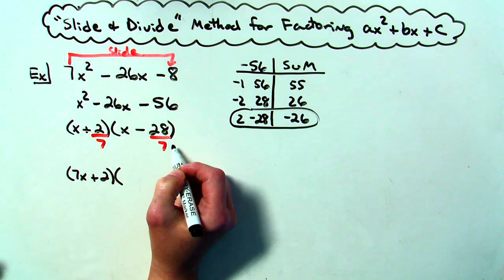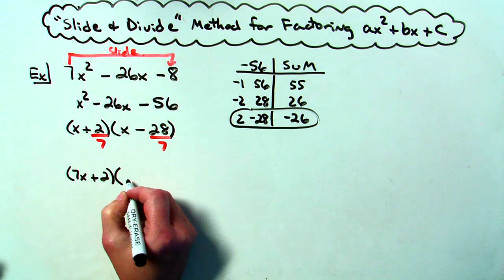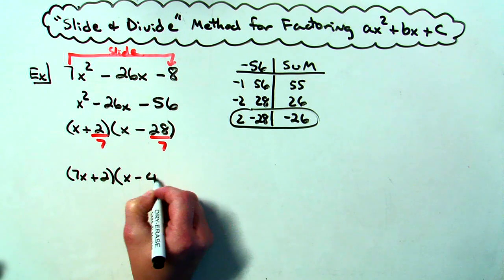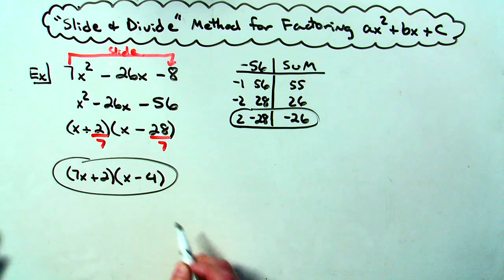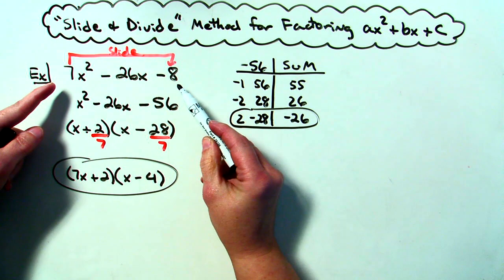On this one though 28 does divide by 7. That comes out to be a nice little 4. So x minus 4. And then there is your factored form for 7x squared minus 26x minus 8.